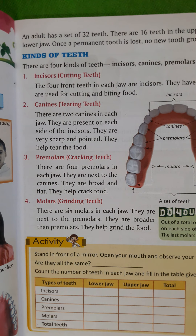That's what we learned in the last class. Today we will learn about the kinds of teeth. There are four kinds of teeth: incisor, canine, premolar, and molar.